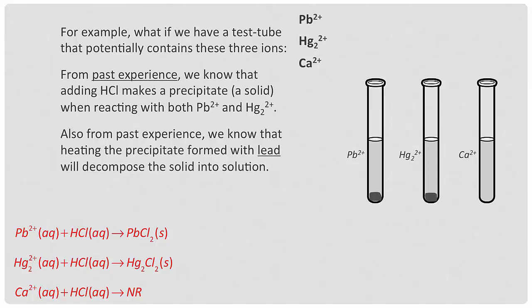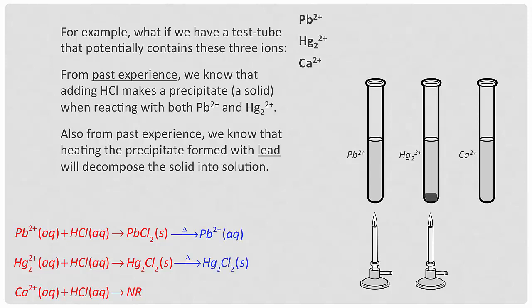Next, we also know from experience that if you heat the lead precipitate, it will decompose back into solution. So I would bring in a Bunsen burner to both precipitates and see what happens. If it goes away, that's a good sign it's lead. If it doesn't go away, that's a good sign it's mercury. Note that the symbol delta over an arrow is often used to represent adding energy in the form of heat — whether using a Bunsen burner, a hot plate, or a water bath.